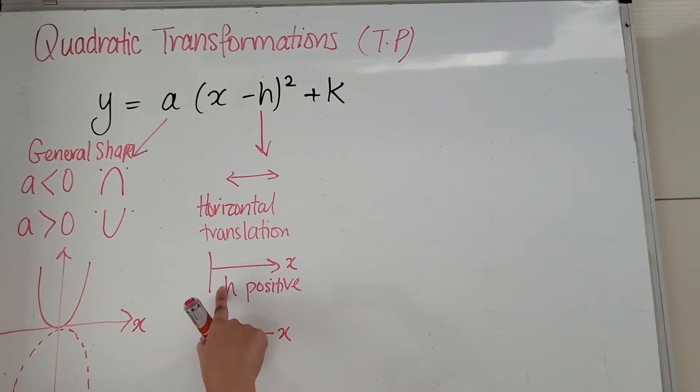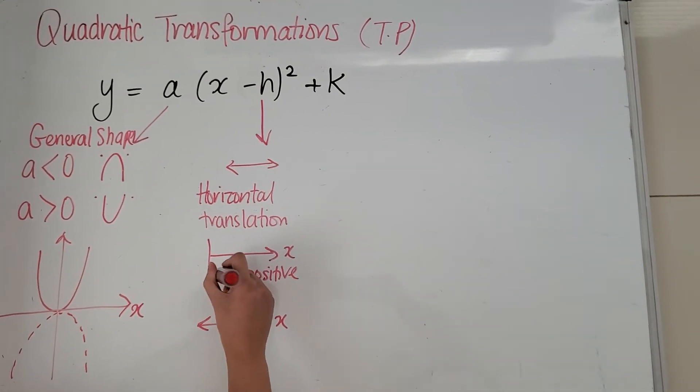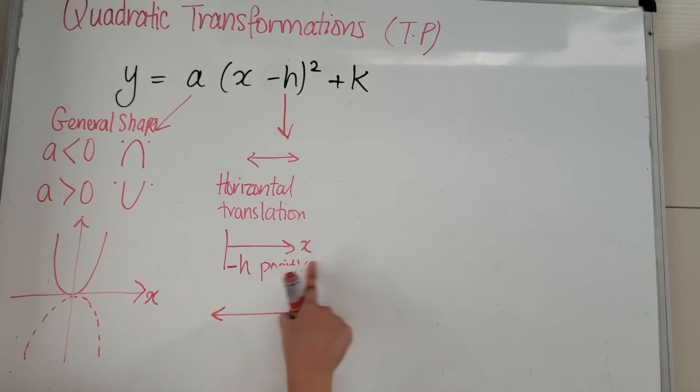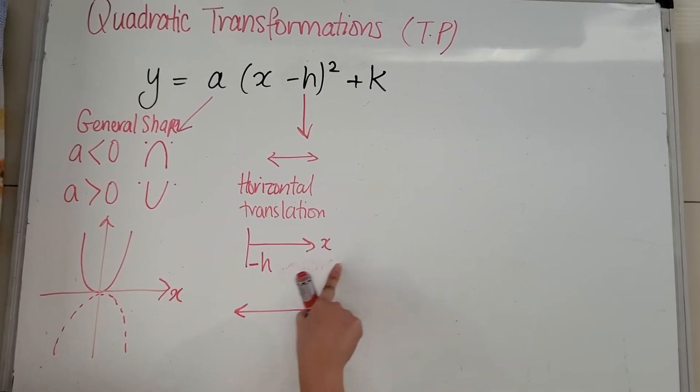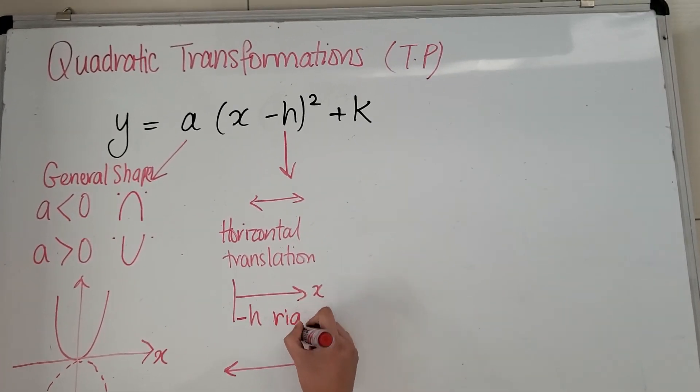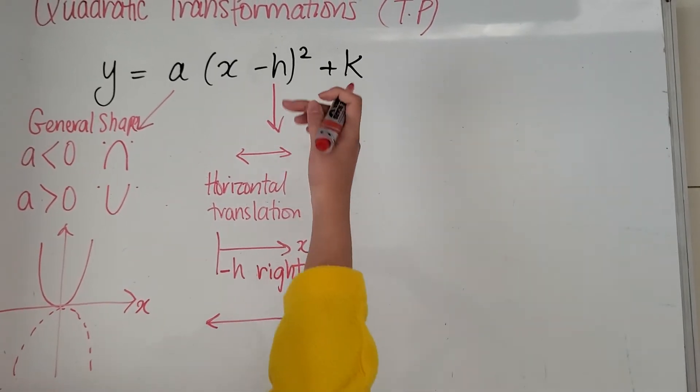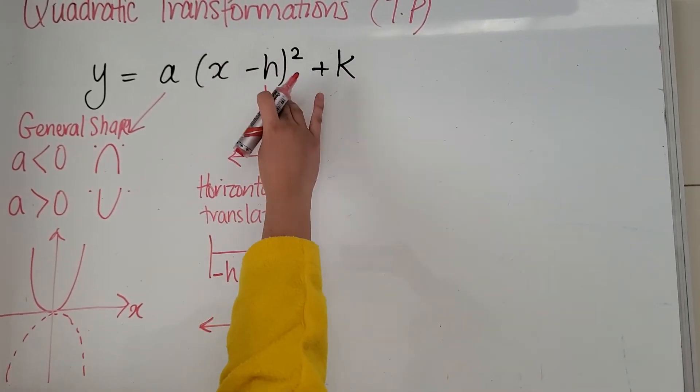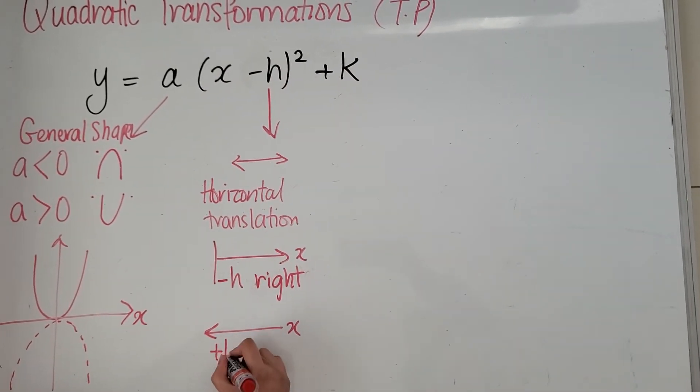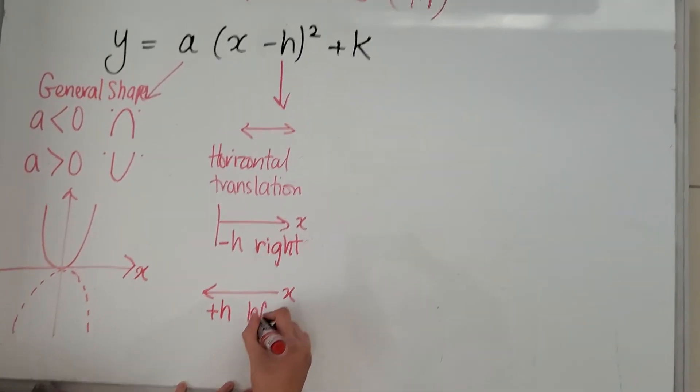No, like I said, sorry. When h is a negative, it goes in the positive direction, so right. So it's always opposites. Remember when it's in brackets, it's the opposite, which means when h is a positive, it's going towards the left.